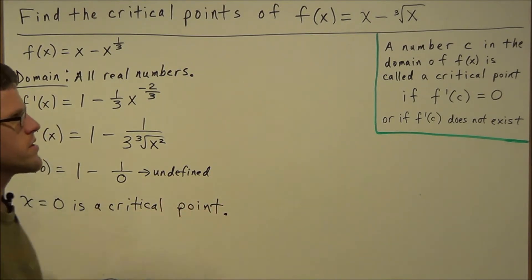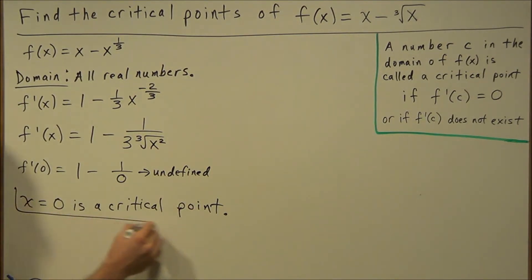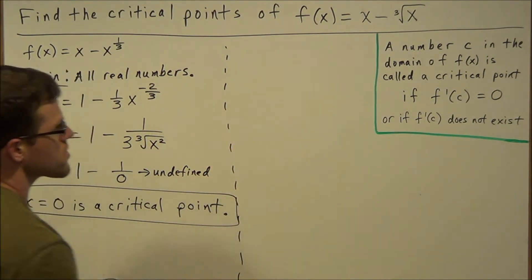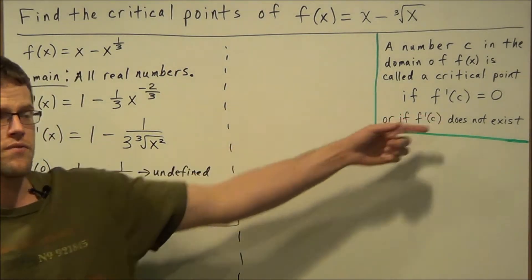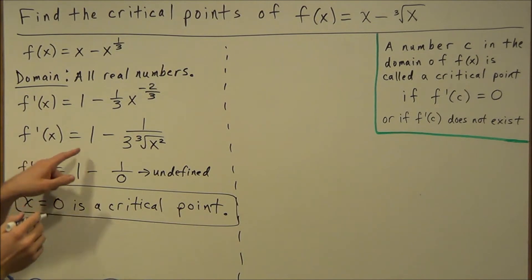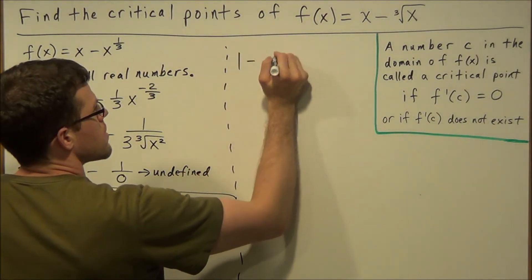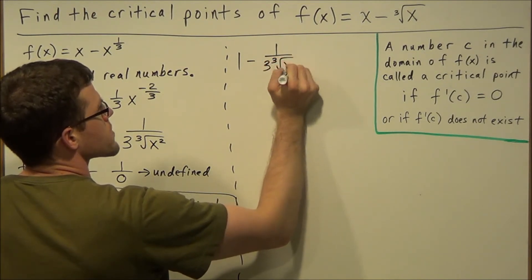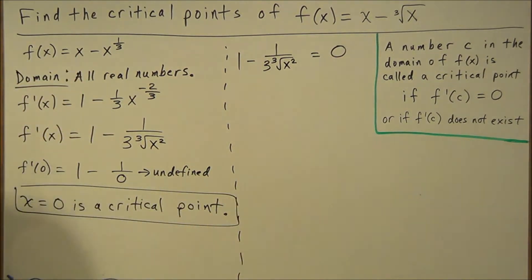This is following directly from the definition of a critical point. The next part we need to check is we need to look for where is the first derivative equal to zero. So we're going to set this part, the 1 minus 1 over 3 cube root of x squared equal to zero.